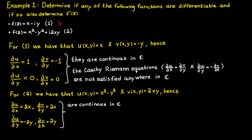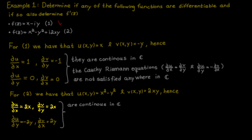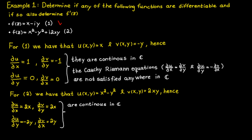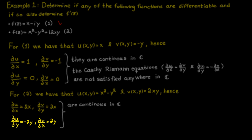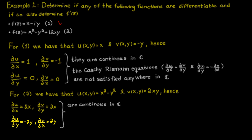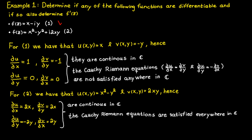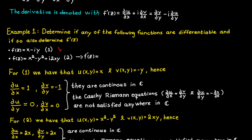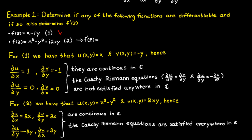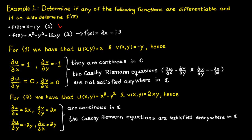The next step is to check the Cauchy-Riemann equations. The partial derivative of u with respect to x is equal to the partial derivative of v with respect to y, and the partial derivative of u with respect to y is equal to the negative of the partial derivative of v with respect to x. This is true everywhere in the complex plane, so the Cauchy-Riemann equations are satisfied everywhere, which makes the function differentiable everywhere. The derivative is simply 2x plus i times 2y.